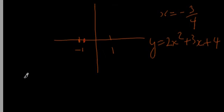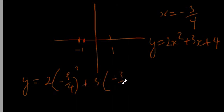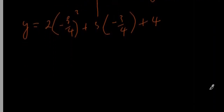So we're going to get y = 2 times (-3/4)² plus 3 times (-3/4) plus 4. And if you continue on,